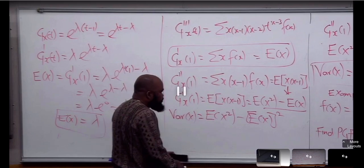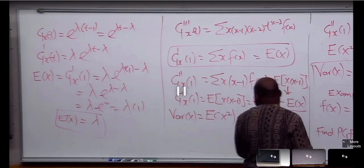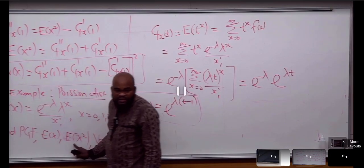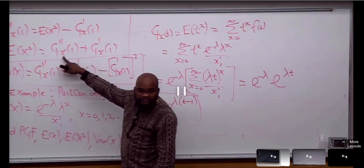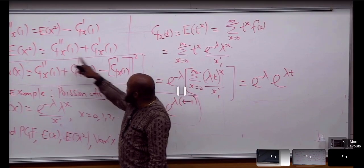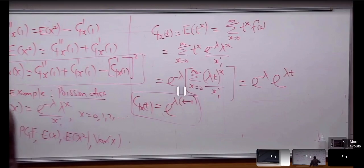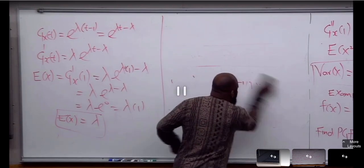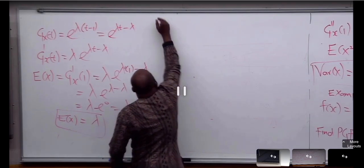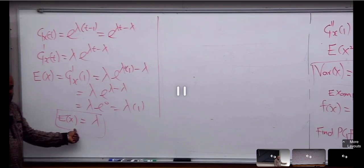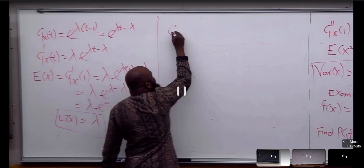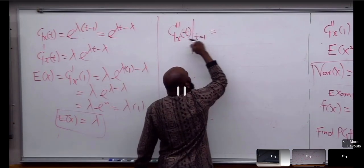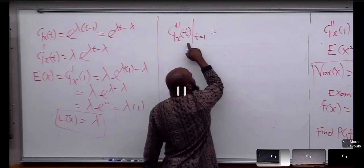We have about five minutes more. Now I want to get E[S²]. For that I need the second derivative. The second factorial moment is G''_S(t) evaluated at t = 1, and the second factorial moment equals E[S(S-1)] = E[S²] - E[S]. So E[S²] = G''_S(1) + G'_S(1). Please take note: the second factorial moment is the same as E[S(S-1)].